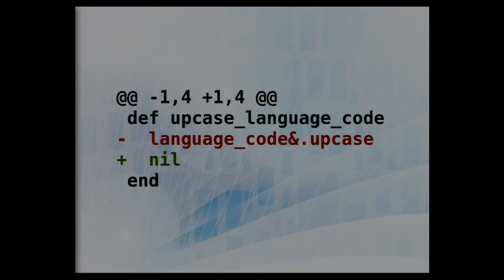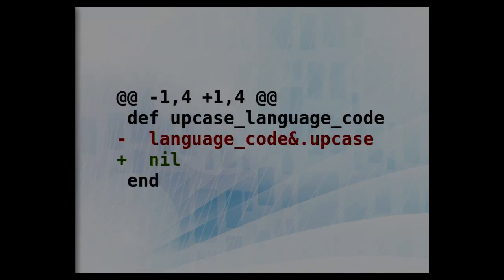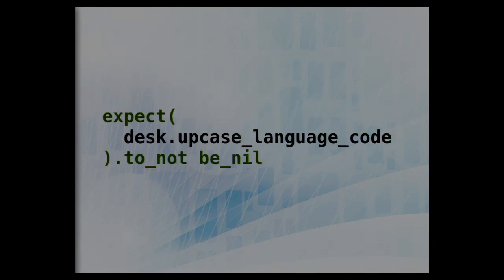Obviously not nil — correct. So we execute the method under test and expect the result to obviously not be nil. If we apply the mutation and run the test, the method will return nil and the expectation will fail — everything will fail and we kill the mutant.